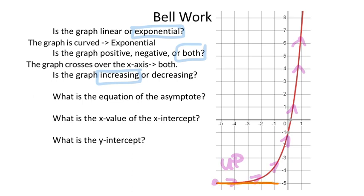The corresponding y-value there is negative 5. The asymptote is not just negative 5—it wants the equation, which is y equals negative 5. Y-equals equations give us a horizontal line like it does down here.